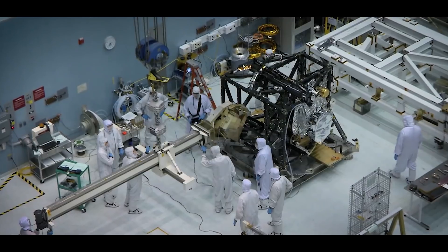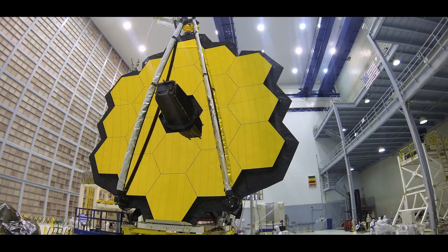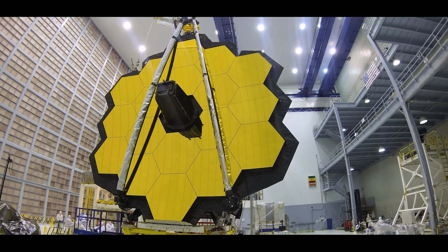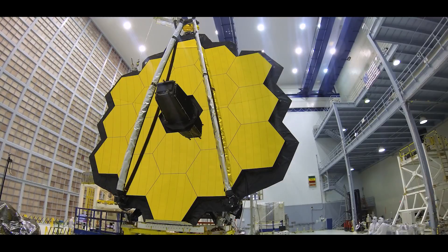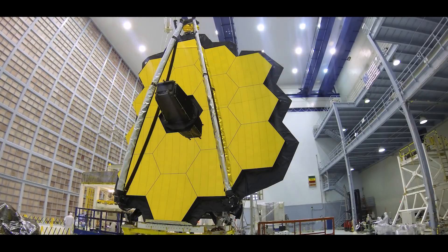The main mirror of Webb does not consist of a single mirror, but 18 hexagonal, extremely light beryllium segments. At 625 kilograms, the mirror weighs only half as much as the Hubble's primary mirror, which is made of solid glass.